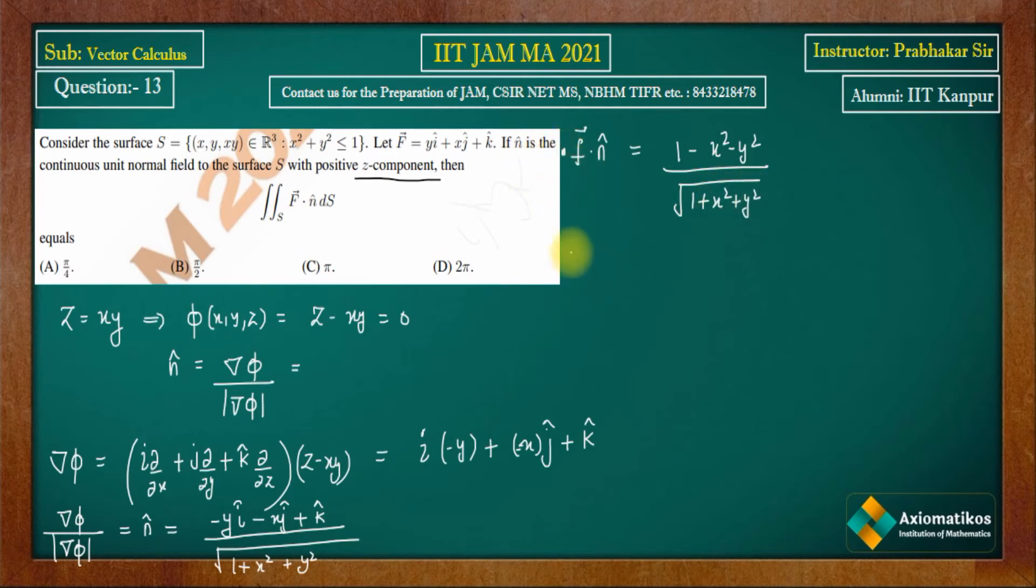Now we have f vector dot n cap. Actually, I don't need to plot it in the three-dimensional system because in the three-dimensional system, it's happening that on the base, the restriction is given that x² plus y² ≤ 1. Now, z equals xy, whatever surface it is, this is an unbounded surface. If there's no restriction on x and y.